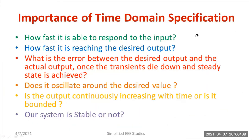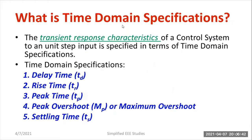Let's understand what is time domain specification. In case of inductor and capacitor: an inductor is mainly storing magnetic energy, whereas a capacitor stores electrical energy. When there is a drastic change of energy from one state to another, you have to consider transient response or transient analysis. If it is a pure resistor, no need to consider transient response. The transient response characteristics of a control system to a unit step input is specified in terms of time domain specification. There are majorly five time domain specifications.